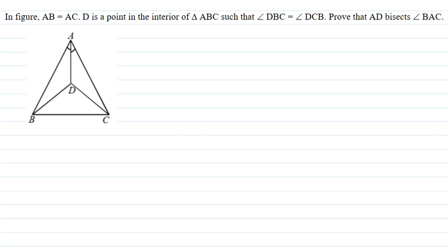Hello everyone, I will be your teacher for this question. Let me explain this question to you. In the figure, AB is equal to AC and D is a point in the interior of triangle ABC such that angle DBC is equal to angle DCB. Prove that AD bisects angle BAC.